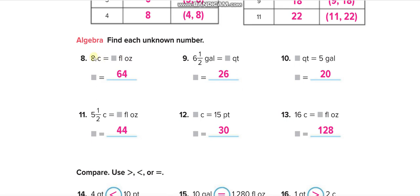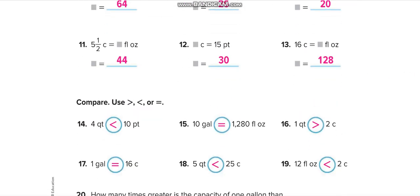One cup is eight fluid ounces, so eight cups is sixty-four fluid ounces. Six and a half gallons — how many quarts? Six times four is twenty-four, and half a gallon is two quarts, so twenty-four plus two is twenty-six quarts. Twenty-five gallons: one gallon is four quarts, so five times four is twenty quarts. Five and a half cups: five times eight is forty, plus half a cup which is four fluid ounces, so forty plus four is forty-four fluid ounces.